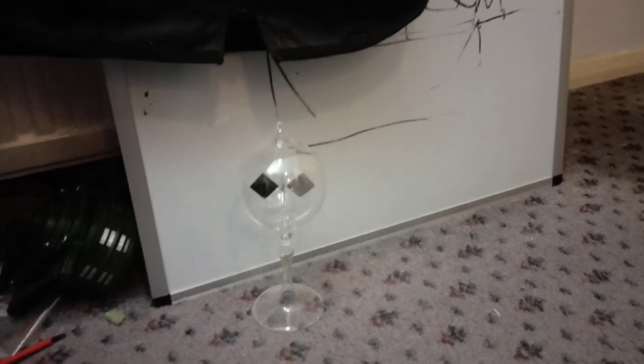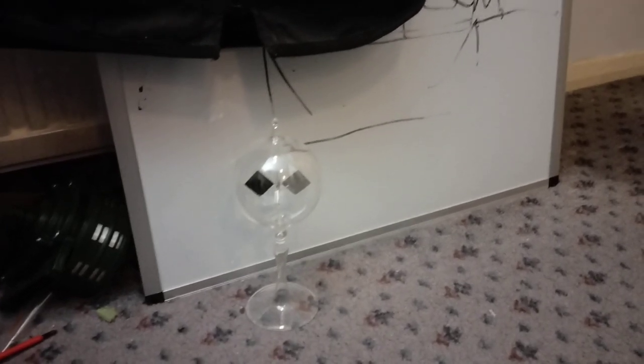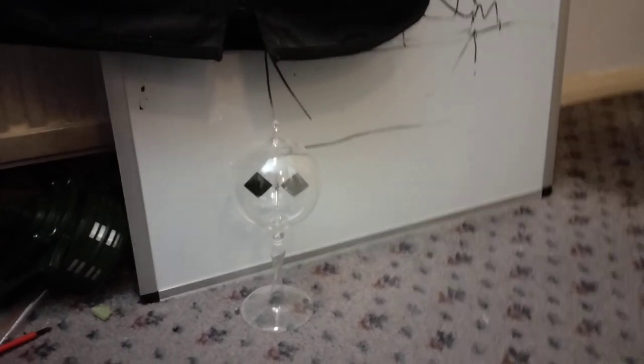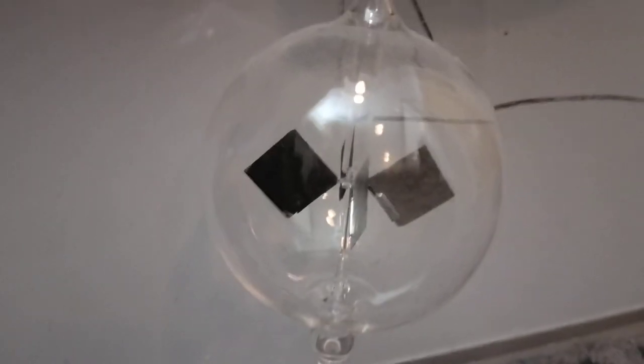But a Crookes light mill is essentially a vacuum tube that has sails in it that spin when exposed to light. So when you're in a room with the lights on, it kind of shakes a little bit, as you can hopefully see, but doesn't really do much.